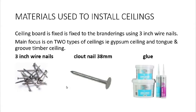Materials used to install ceilings: the ceiling board is fixed to the brandering using three-inch wire nails. To install the branders to the tie beams you require three-inch wire nails. When fixing the ceiling board to the brandering, you require clout nails — 38 millimeters, very short. The cornice is glued to the ceiling board using silicone glue.